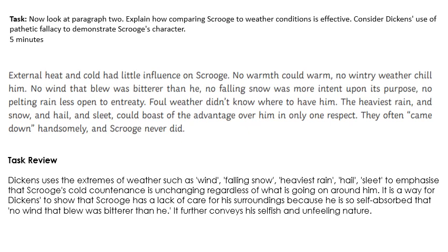'External heat and cold had little influence on Scrooge. No warmth could warm, no wintry weather chill him. No wind that blew was bitterer than he. No falling snow was more intent upon its purpose. No pelting rain less open to entreaty. Foul weather didn't know where to have him. The heaviest rain and snow and hail and sleet could boast of the advantage over him in only one respect — they often came down handsomely and Scrooge never did.' Dickens uses the extremes of weather — wind, falling snow, heaviest rain, hail and sleet — to emphasise that Scrooge's cold countenance is unchanging regardless of what is going on around him. It is a way for Dickens to show Scrooge's lack of care for his surroundings because he is so self-absorbed: 'no wind that blew was bitterer than he.' It further conveys his selfish and unfeeling nature.